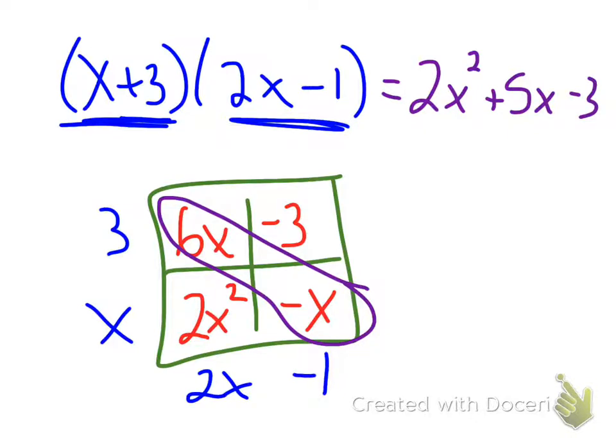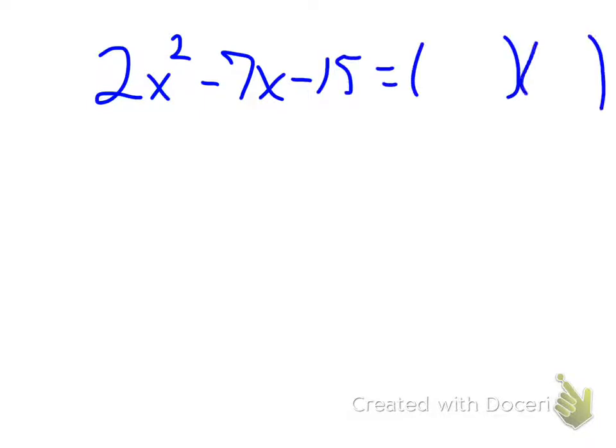So now if we think about factoring, we are actually going to be starting with something like this. So for instance, a different problem. If I had 2x squared minus 7x minus 15, and I want to write that as two sets of binomials multiplied together.